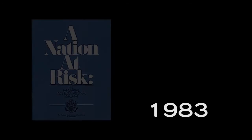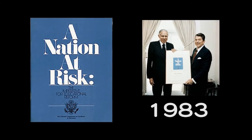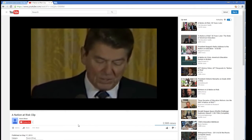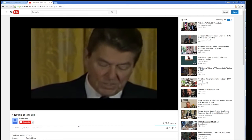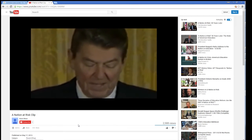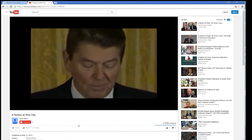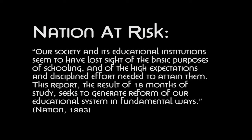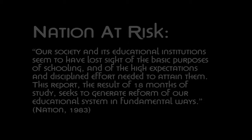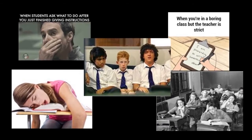In 1983, a report titled 'A Nation at Risk' was published by President Ronald Reagan's National Commission on Excellence in Education. The report stated: 'Our society and its educational institutions seem to have lost sight of the basic purpose of schooling and of the high expectations and disciplined effort needed to attain them.' The report, the result of 18 months of study, sought to generate reform of our educational system in fundamental ways, painting a grim picture of the state of education in the early 1980s.